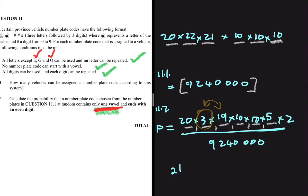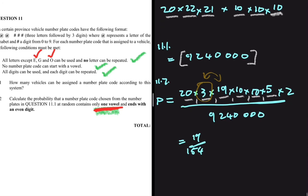Multiplying by 2 accounts for that possibility. The probability will therefore equal 20 × 3 × 19 × 10 × 10 × 5 × 2, all divided by 9,240,000. Putting those numbers into the calculator gives 19/154, or approximately 0.12.